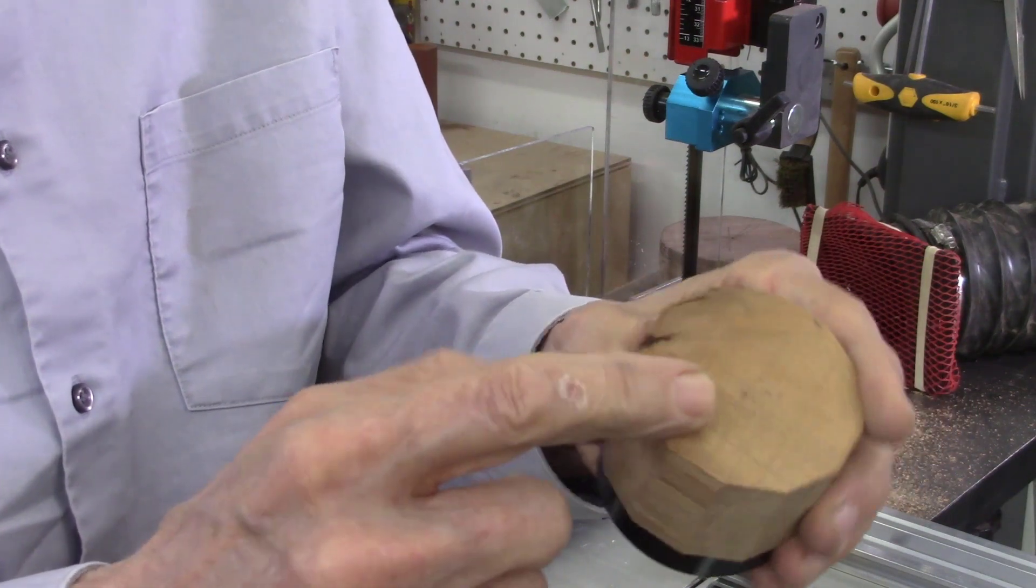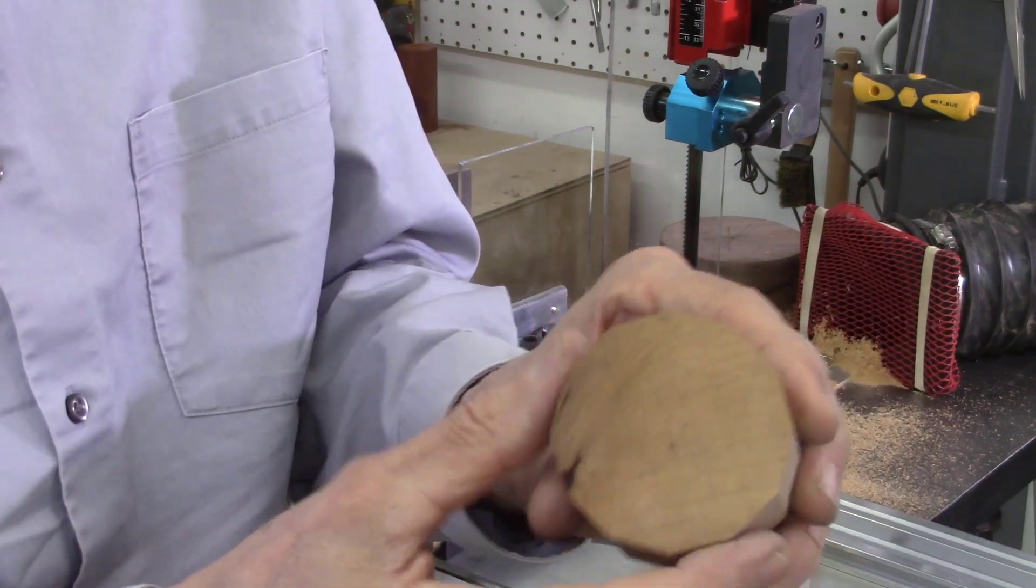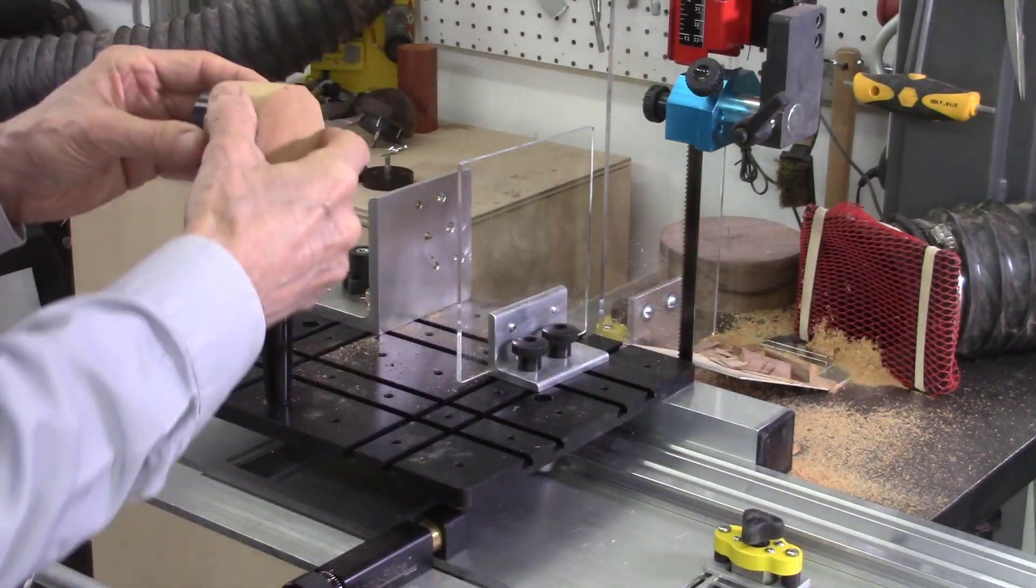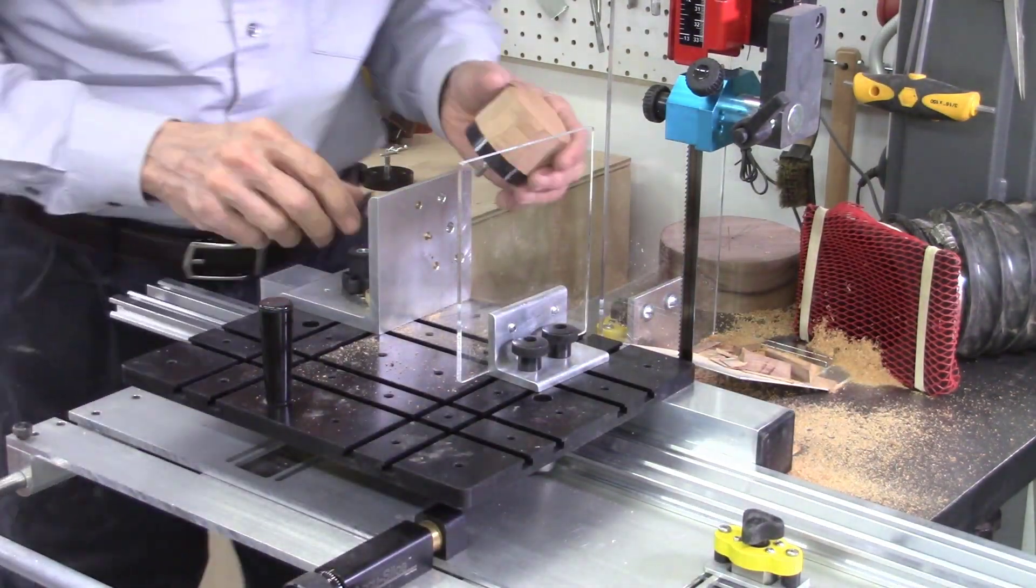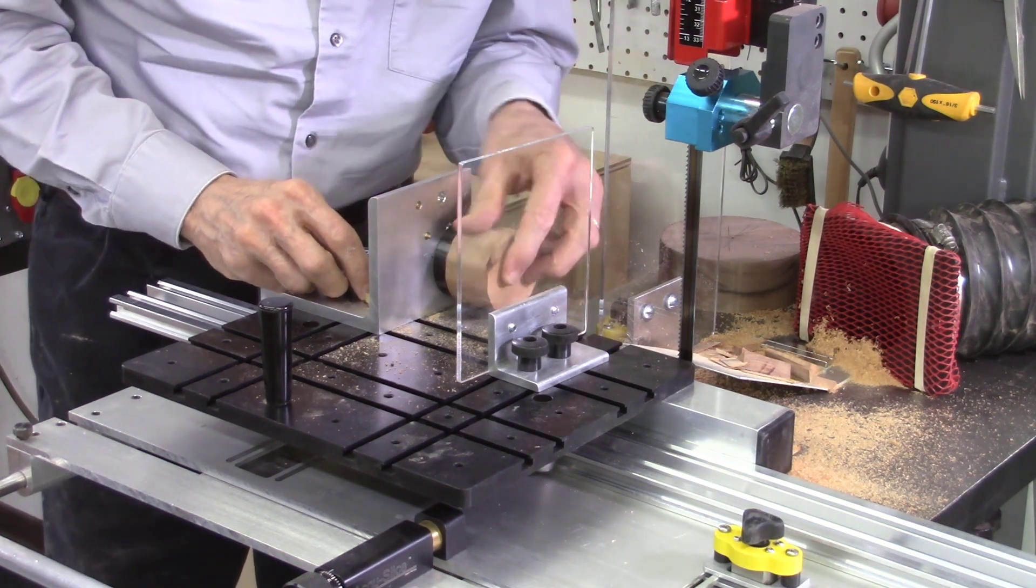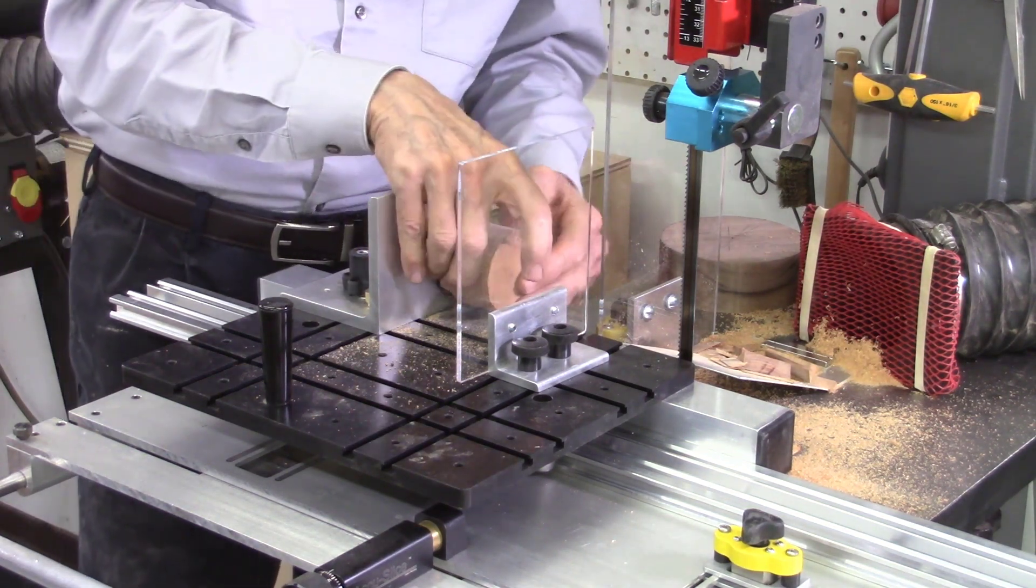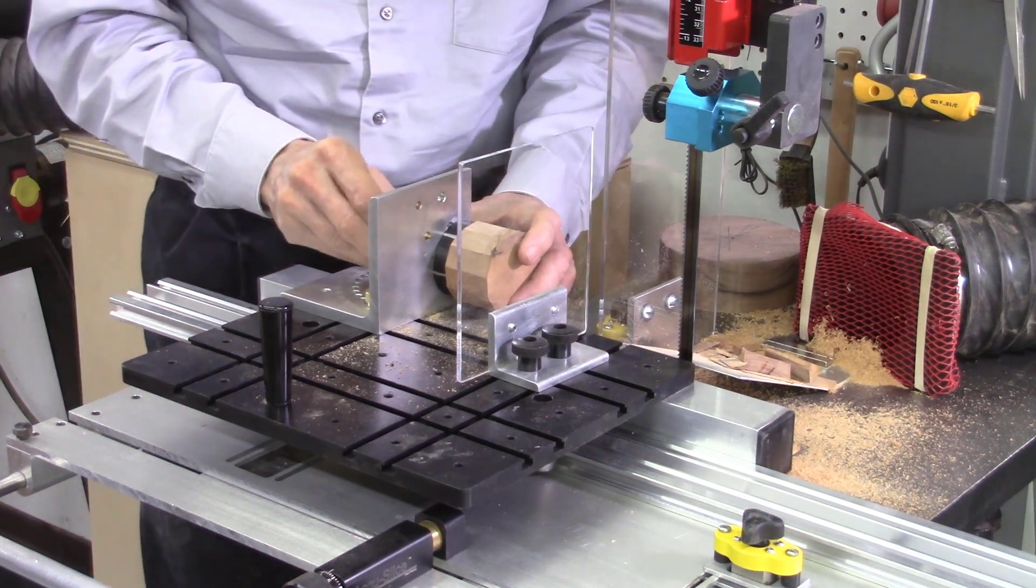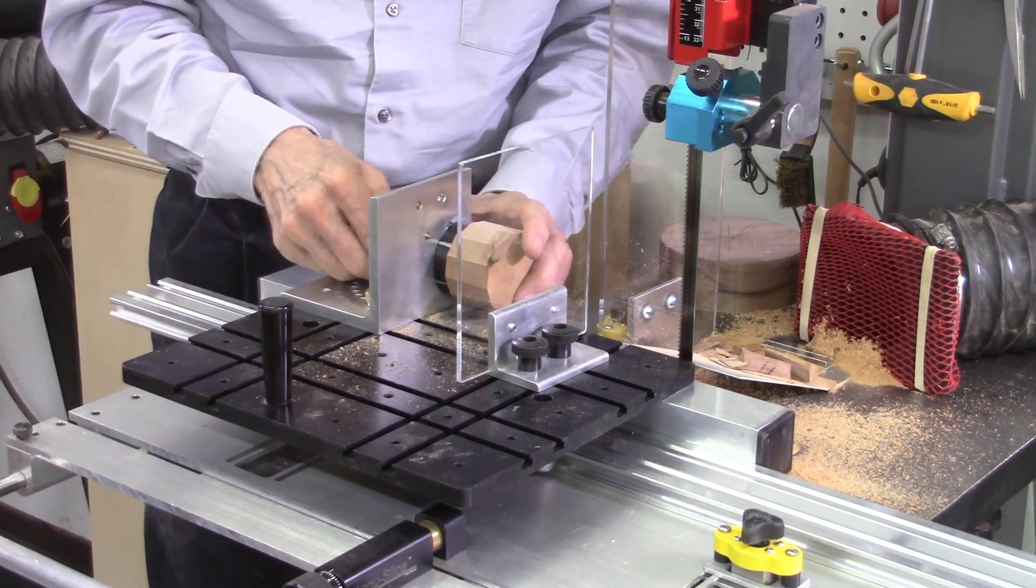Now that I've cut that smaller, I can actually use this bottom position, a little more stable. So I'll go ahead and use that bottom position for cutting my next set of facets.